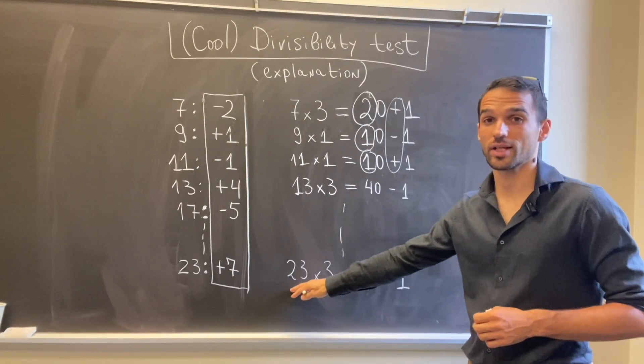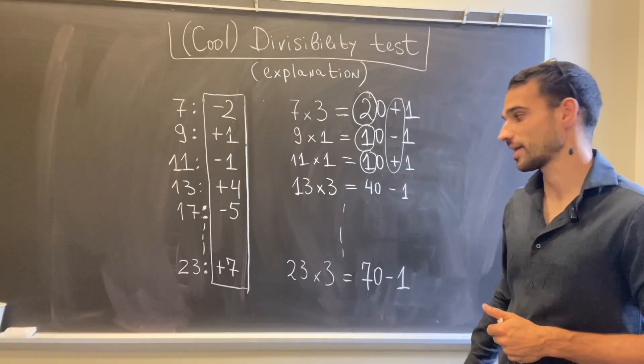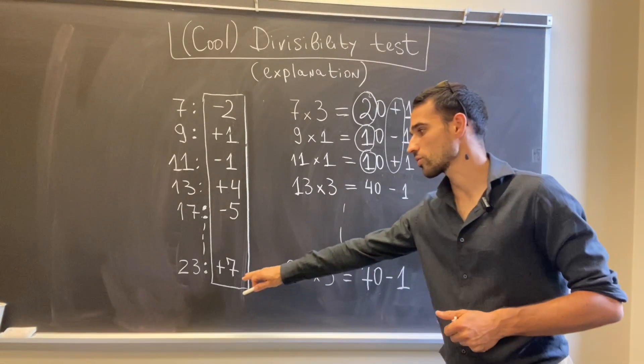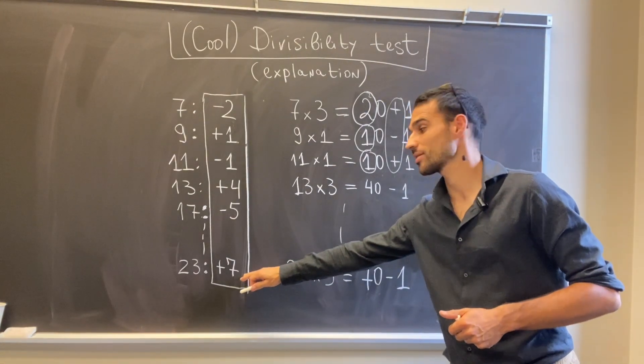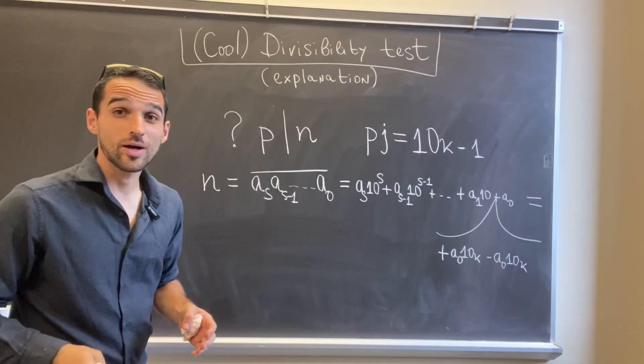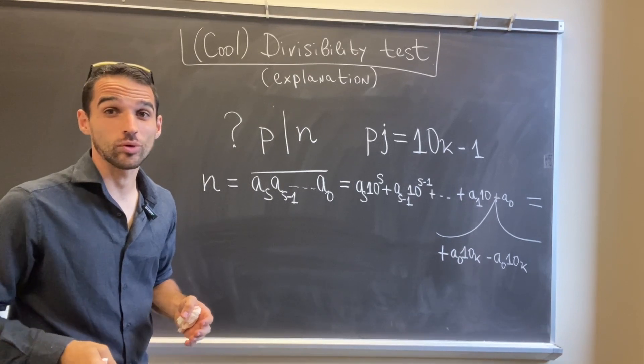And again, this implies that my magical constant for 23 would be 7 with a plus here because I have a minus there. Okay, so now we are ready to explain why the trick works.